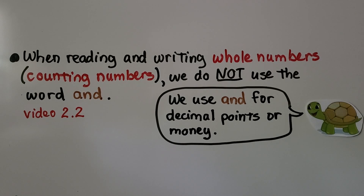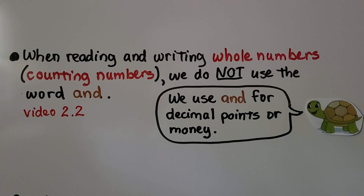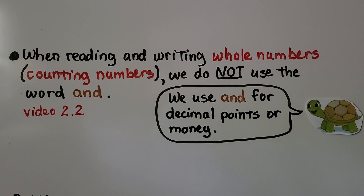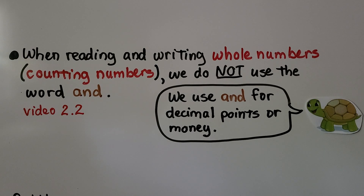As we learned back in video 2.2, when reading and writing whole numbers — those are counting numbers — we do not use the word 'and.' We use 'and' for decimal points, which you'll learn in fourth grade, or for money, which we'll learn later in second grade.